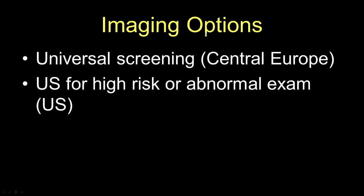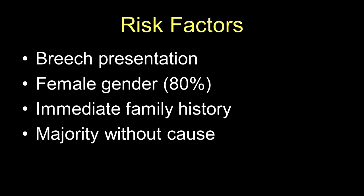In terms of imaging, there are two options. One is universal screening, which is used in Central Europe because the incidence of developmental dysplasia is so high among the population. But in the United States, we use ultrasound for high-risk or abnormal exam. In terms of risk factors, we worry about breech presentation, female gender, and family history.